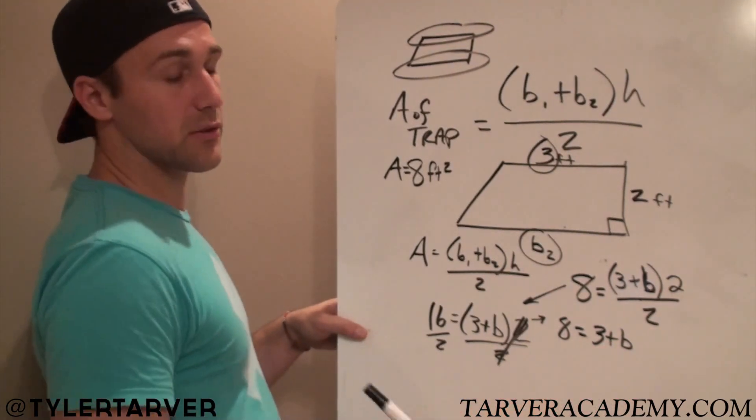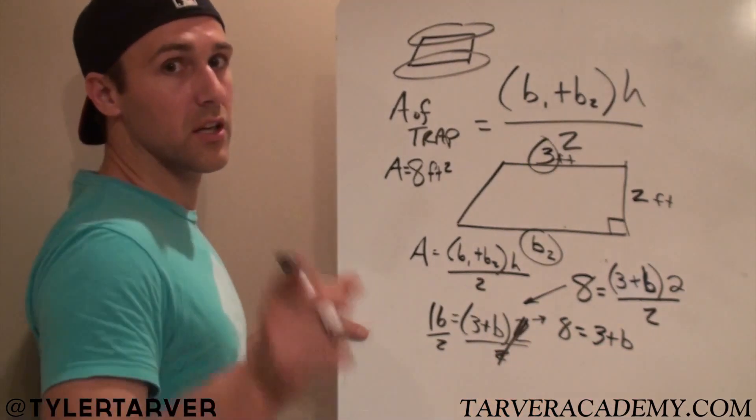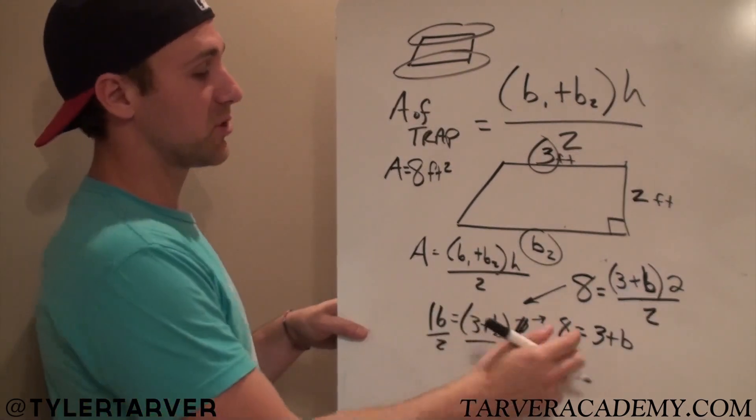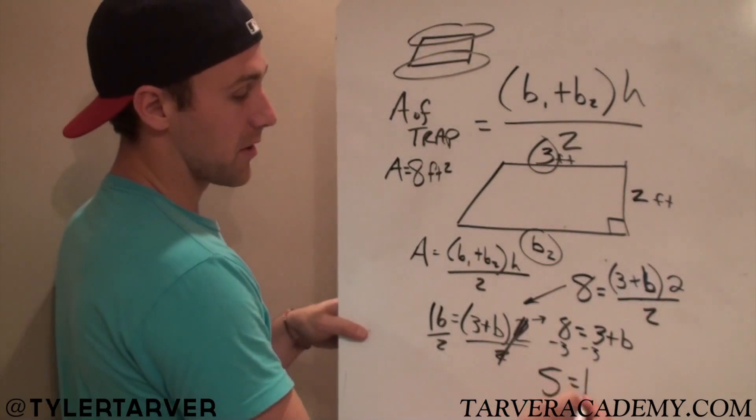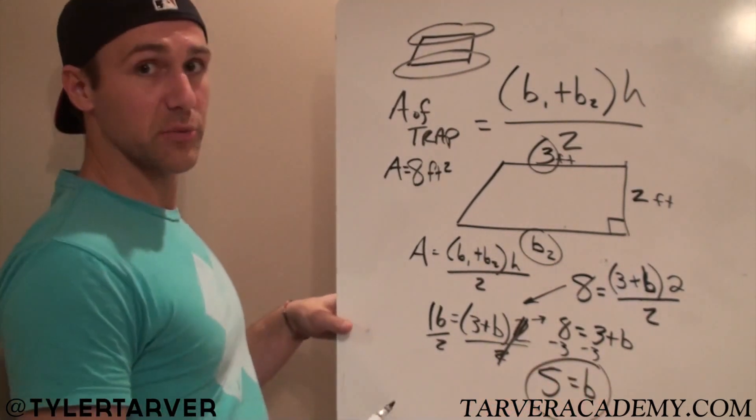Only thing left to get rid of is that 3. How do you get rid of a positive 3? Alicia, I heard you. Subtract 3. 5 equals B. And that should be your answer.